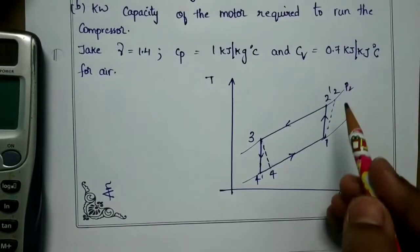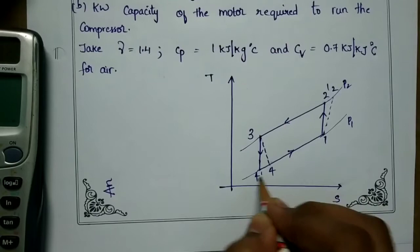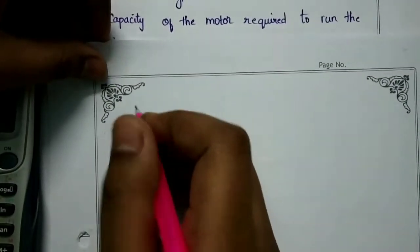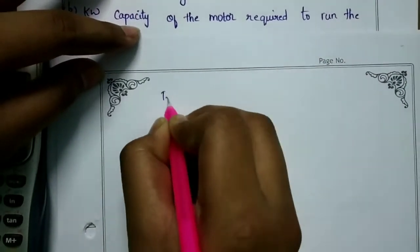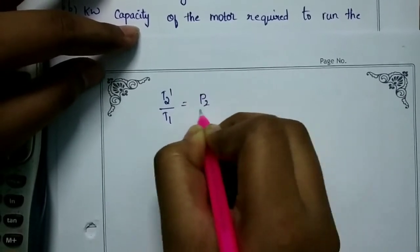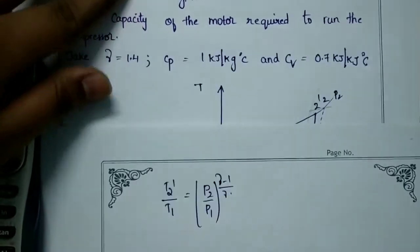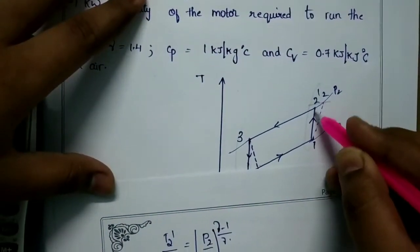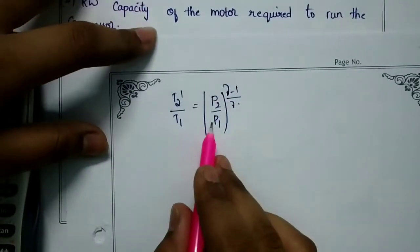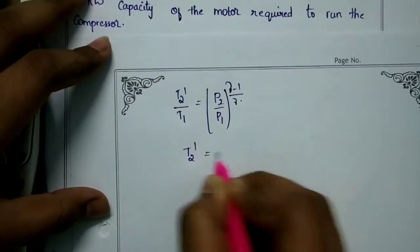Unknown temperatures in the T-S diagram are T2 and T4. T4 dash is unknown for the temperature. Now I will find the temperature. T2 dash by T1 is equal to P2 by P1 whole power gamma minus 1 by gamma.